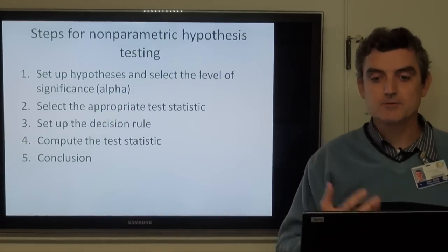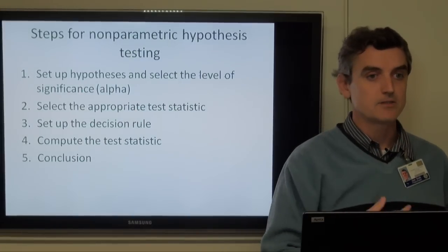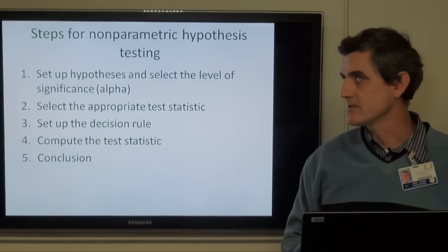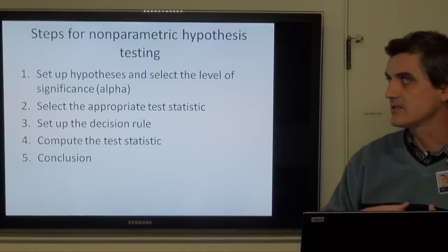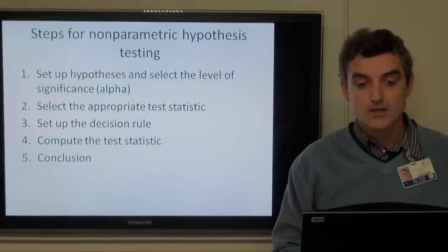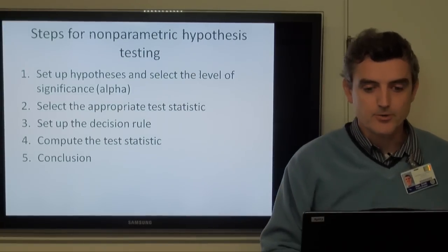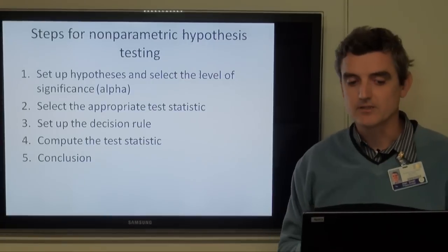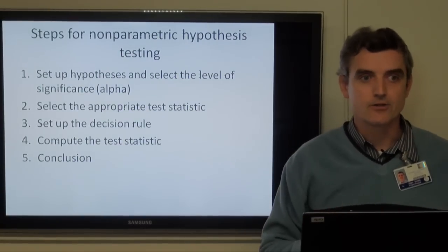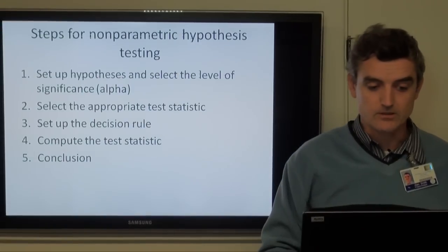The steps for non-parametric hypothesis testing are exactly the same as for any other type of hypothesis testing: set up hypotheses, set up the level of significance using alpha, select the appropriate test statistic, set up the decision rule, compute the test statistic, and state your conclusion — whether you reject or do not reject the null hypothesis.